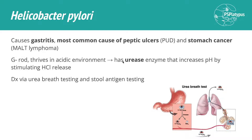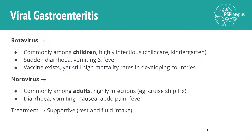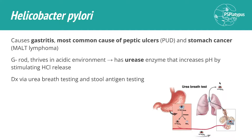We give the patient carbon-14 urea to swallow — that's a radioisotope. If Helicobacter pylori infection is present, its urease will break it down, and then we can measure the carbon dioxide levels breathed back out through the lungs. That increase in carbon dioxide — especially with the radioisotope — is then diagnostic of Helicobacter pylori infection.